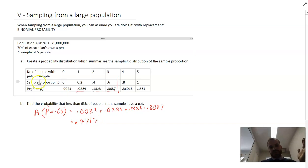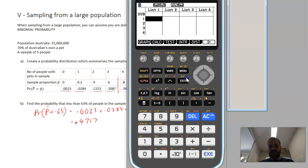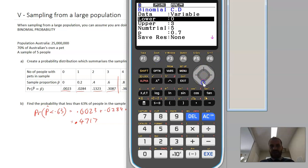Now there is another way to do this without drawing our little probability distribution there. We could have just gone into our calculator, gone into stat mode, distribution, binomial, binomial CD, cumulative distribution. And we could have made our lower zero, our upper three, and our number of trials five, and our probability 0.7.